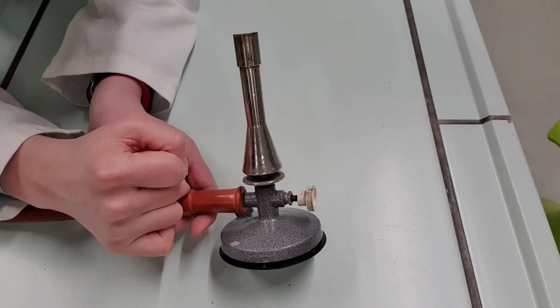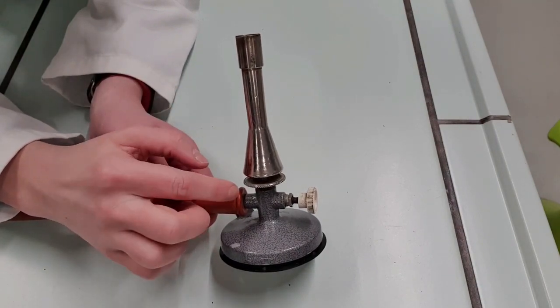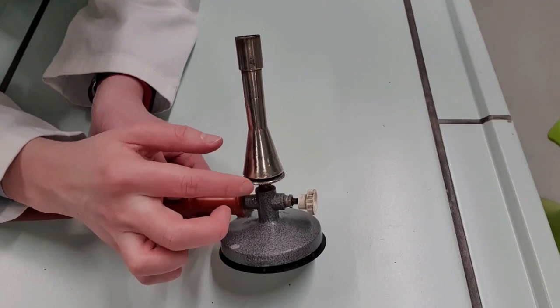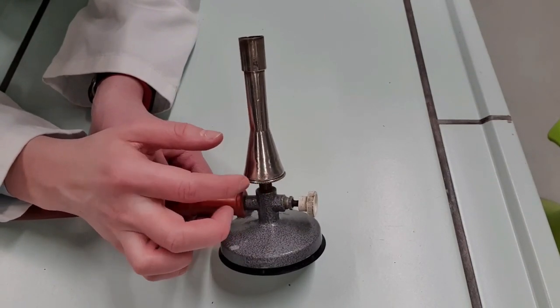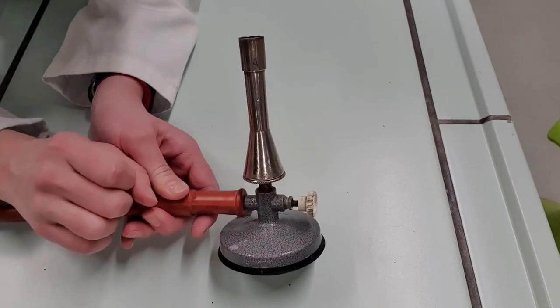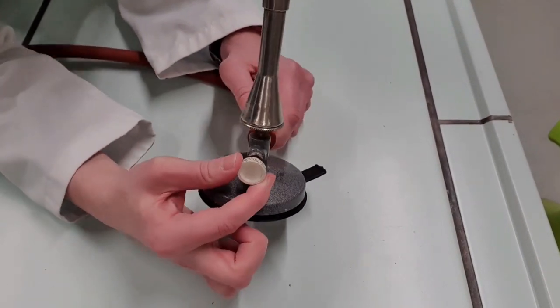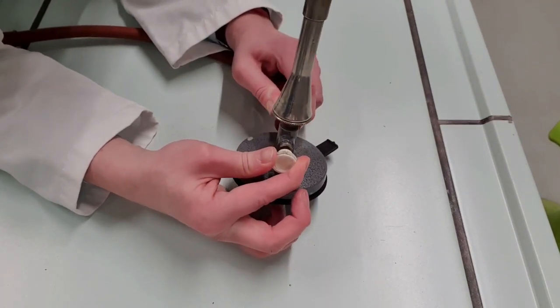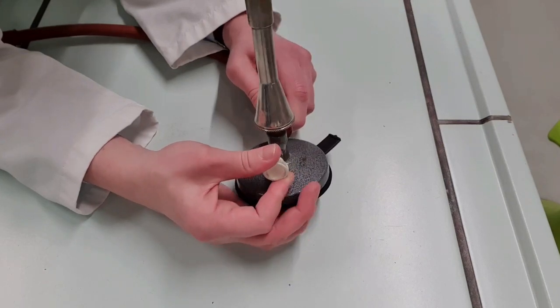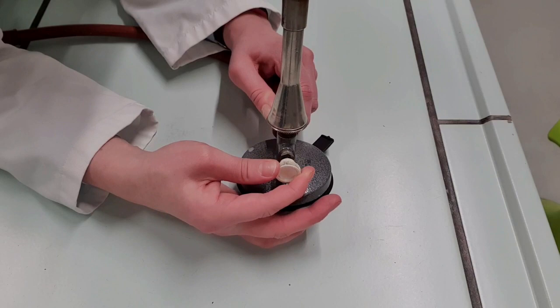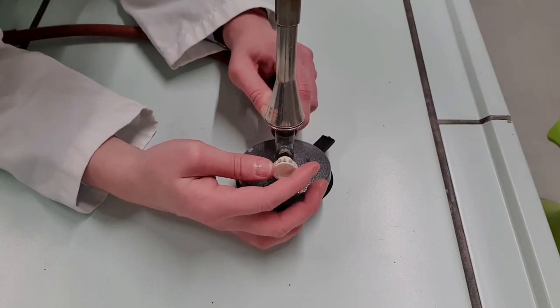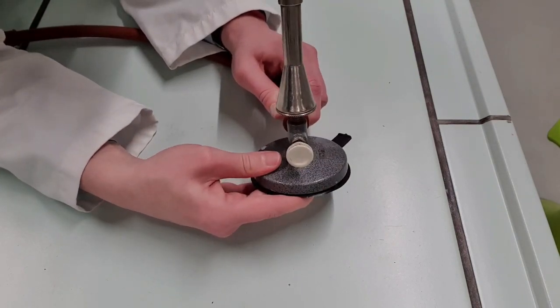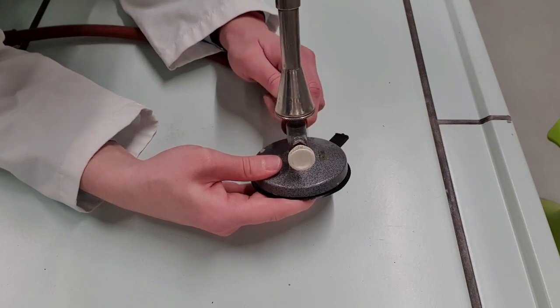Now before you start anything with your Bunsen burner make sure no matter what the model is that the air hole is closed firmly because it will be much more difficult to light when it's open. This one has an addition. There is a valve here. Some Bunsen burners do not have this. If you do have a valve, it's clockwise to tighten. That means the Bunsen is off and anti-clockwise to turn the Bunsen on. When you want to start the Bunsen, another check you want to make if you have this valve is that it is closed because again, it's just a little bit more tricky to light your Bunsen. Okay, now we are ready to go.